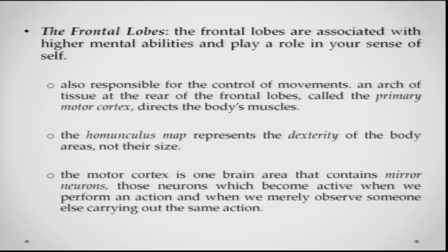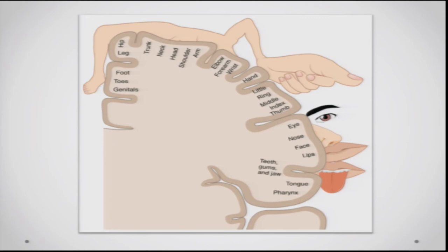The homunculus map shows the amount of neural tissue allocated to processing different body parts. You can see that a large amount of neural tissue is allocated to the face, while relatively less is allocated to the trunk, neck, and head.